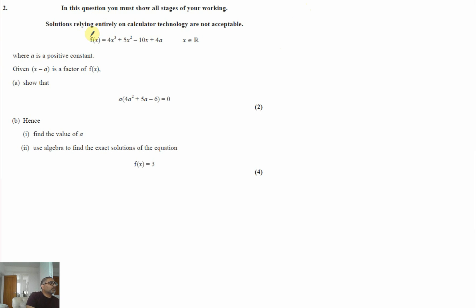Okay, question two. We've got a function here given to us, so f of x is this function here where a is a positive constant. Now the major clue in the question, it says given that x minus a is a factor of f of x.